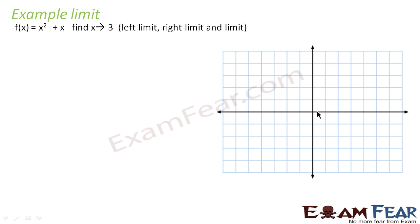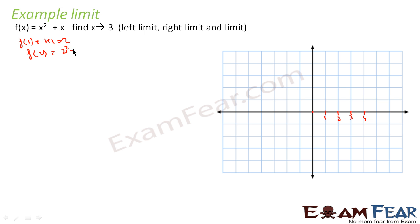Let's suppose this is 0, this is 1, this is 2, this is 3, this is 4. So x equal to 0 gives 0. x equal to 1 gives 1 plus 1 equals 2. f(1) = 1 + 1 = 2. f(2) = 2² + 2 = 4 + 2 = 6. f(3) = 3² + 3 = 9 + 3 = 12. And f(4) = 4² + 4 = 20.